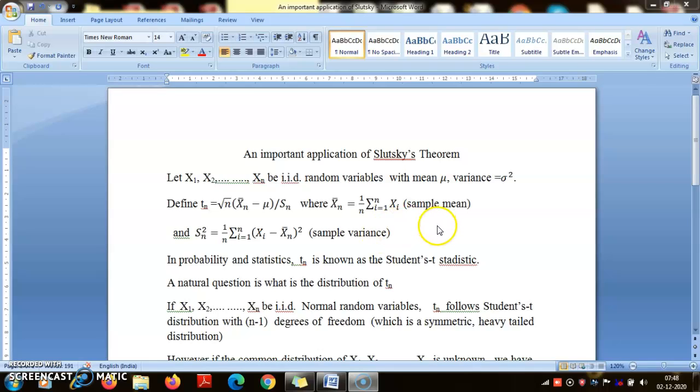So what I have here is a ratio. X1, X2, Xn are i.i.d. random variables with mean μ and variance σ², that's it. We don't know what is the distribution of the Xi's.